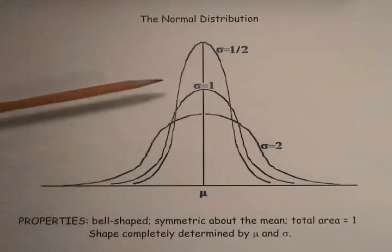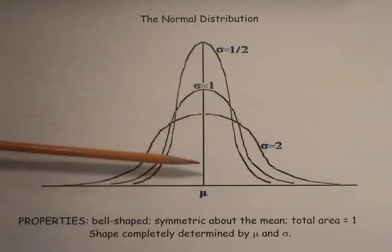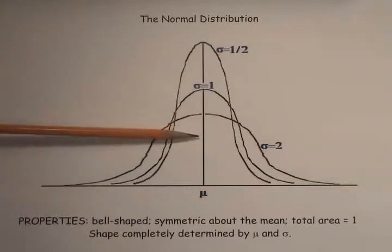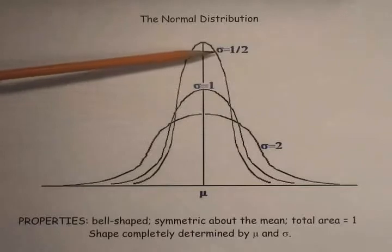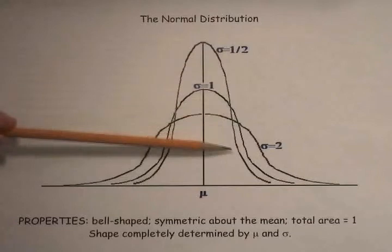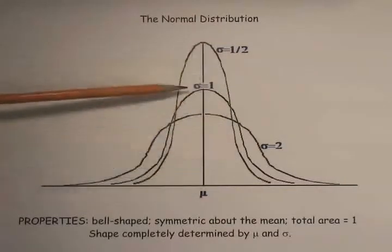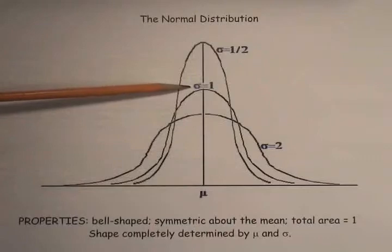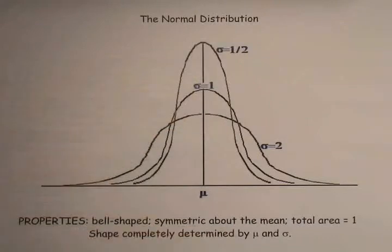I've exaggerated some of these things here just to make a point, but given a certain value of mu, the only way the curve can vary is in its standard deviation. A small standard deviation, say of a half, has a curve that hugs the mean more closely. As the standard deviation gets larger, the curve spreads out farther and farther in the tails.